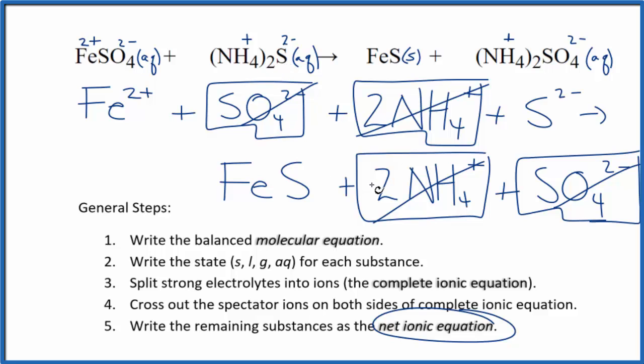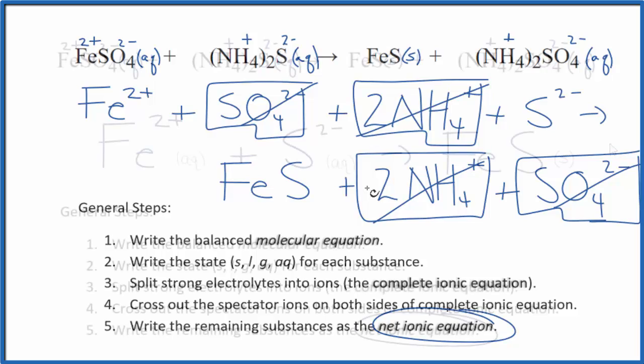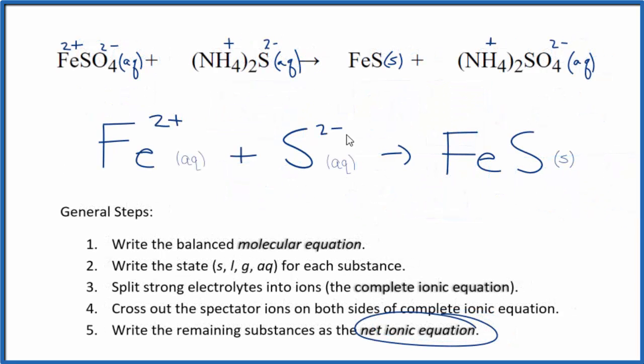I'll clean this up. Write the states. We'll have our net ionic equation. So this is our balanced net ionic equation for iron 2 sulfate plus ammonium sulfide. You'll note, charge is conserved. We have 2 plus, 2 minus. That gives us a net charge of zero in the reactants. Products, this is neutral. Net charge of zero. The atoms balance as well.